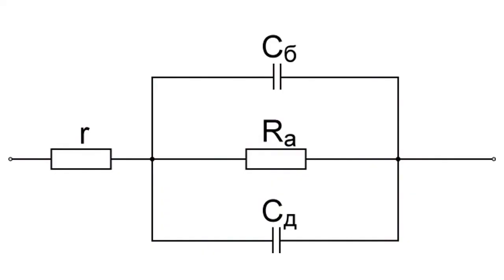An equivalent circuit is an electric circuit consisting of perfect components and functioning in about the same way as the original circuit. An equivalent circuit may reflect various parasitic effects, and it can be made for one component or for the whole complex circuit.